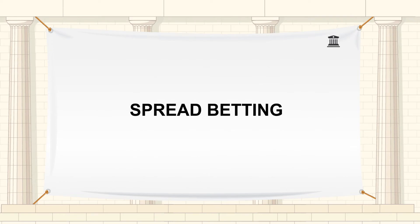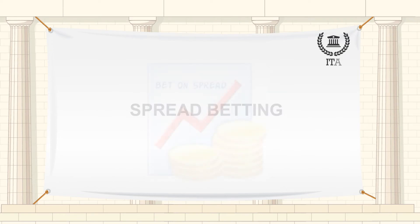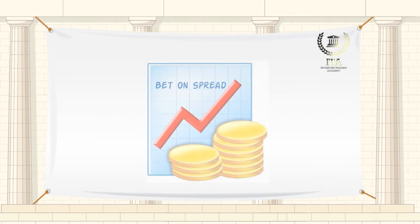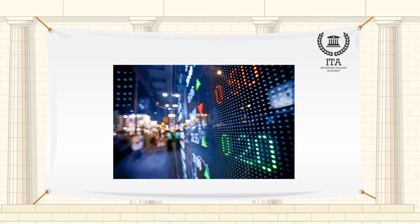A financial spread bet is a way of trading on an asset such as a share or a commodity, or even an entire market such as the FTSE 100 index, without having to physically own that asset. Spread betting involves taking two-way bets on the movement of assets such as foreign exchange, stock indices and commodity prices.